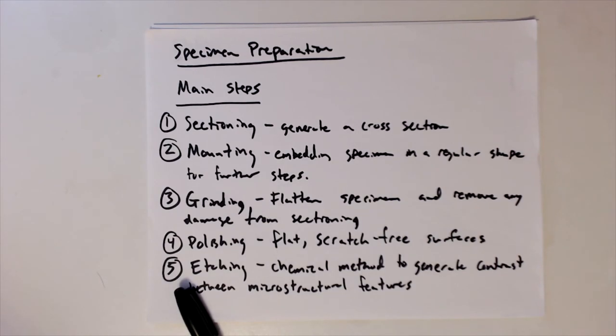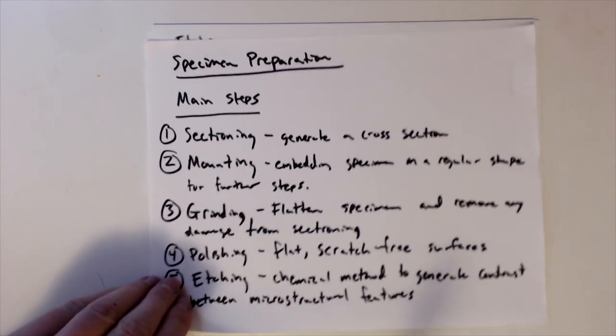Alright, in this module we'll talk about the last of the specimen preparation techniques, last of the steps, etching. As I mentioned in the intro, this is a chemical method and it gives us contrast. We've just created a scratch-free mirror surface that doesn't tell us much about the microstructure, and so what we're going to do is a chemical method, sometimes an acid, to create contrast between different microstructural features.